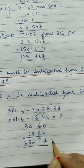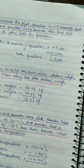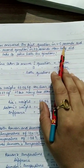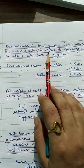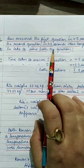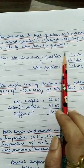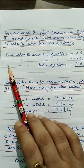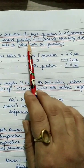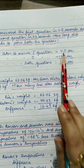This is our value of x. Question number 6: Ram answered the first question in 4.5 seconds and the second question in 3.3 seconds. How long did he take to solve both questions? Time taken for the first question is 4.5 seconds, second question is 3.3 seconds. Adding both together, you will get 7.8 seconds.